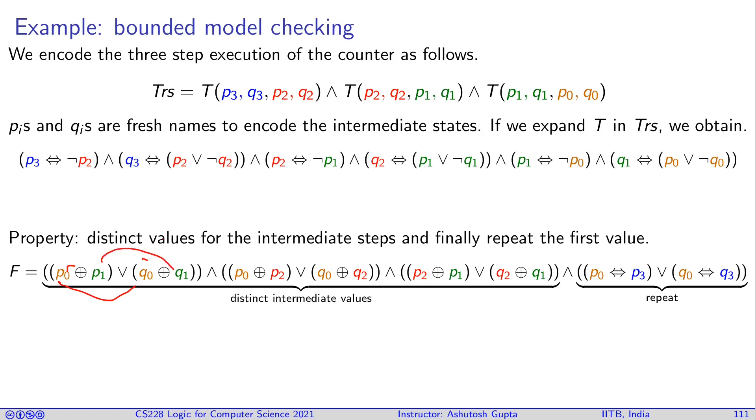However, you also want to say that in two steps or immediately after next step there is no repetition. When you go from the current value p_0, q_0 to next value p_1, q_1, they should not be same. So you're saying the first step you get a distinct value, then again you get a next step, also p_0 should be different from p_2, q_2, and also p_2, q_2 should be different from p_1, q_1. When you reach to p_3, q_3, they should be equal to p_0, q_0.